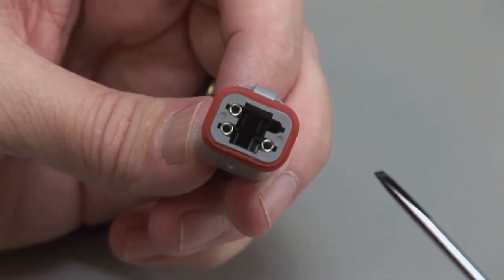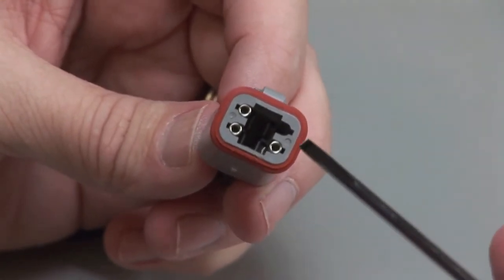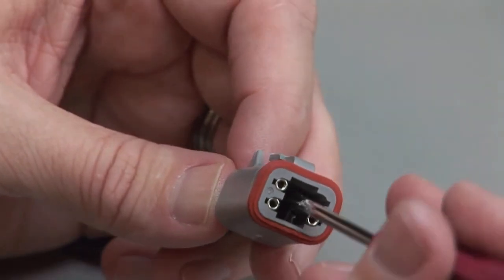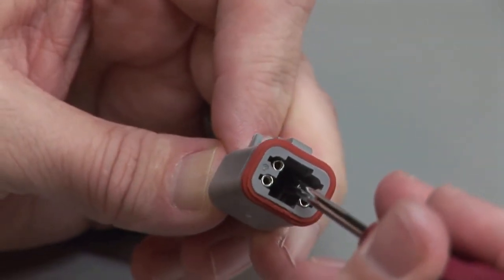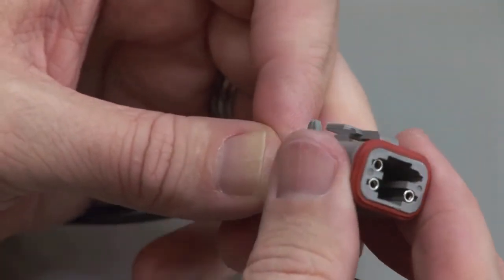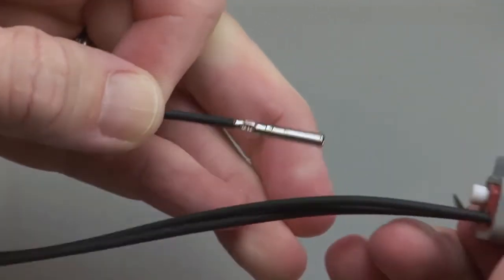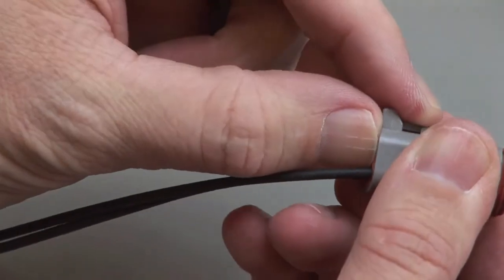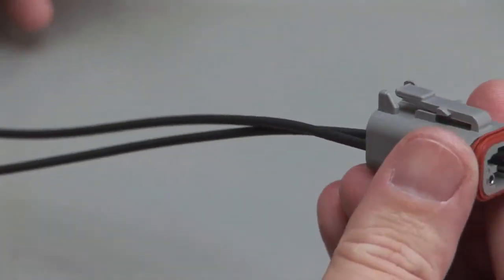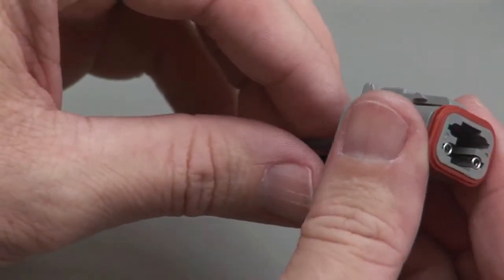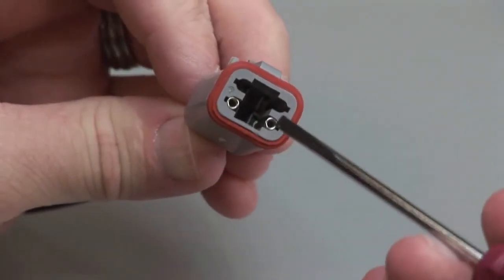To remove the contacts, release the locking finger by moving it away from the shoulder of the contact, while at the same time gently pulling the wire through the rear grommet. Removing the contact may dislodge the rear grommet, so it may be necessary to hold the rear grommet in place when pulling the wire out. Repeat this process for all of the wires in the plug and the receptacle.